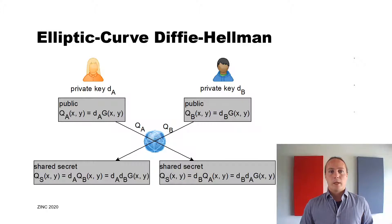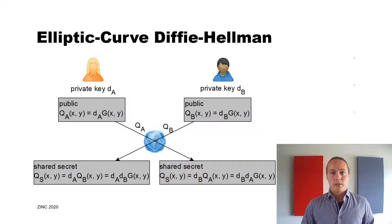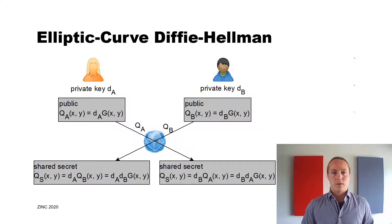When Alice receives the public key from Bob, she computes dA — her private key — times the public key qB of Bob to compute qS, which is the shared secret of Alice and Bob. No one else than Alice and Bob is able to compute this, because you need one of the public keys and one of the private keys, and the other private key.